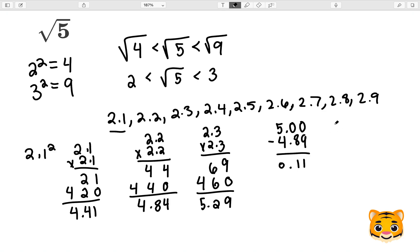and then we will do 5.29 minus 5.00 to get 0.29. As we can see, 4.89 is closer to 5, because it's only 0.11 away, whereas 5.29 is 0.29 away from 5.